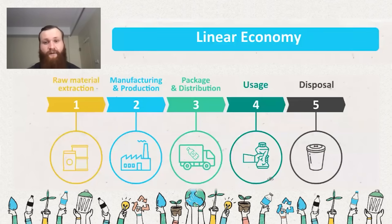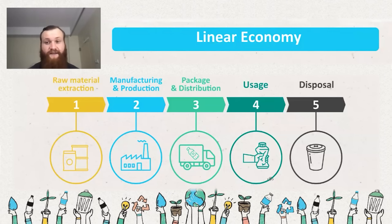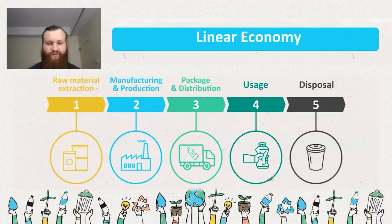Going through a step-by-step breakdown of the stages of a linear economy, with a glass jar as our example. Step one: raw material extraction. In this example, we're looking at a glass jar — our raw material extraction is the harvesting of the materials needed to make glass from nature. In this case, it would be sand — a quick dredging of sand out of some lakefront area.